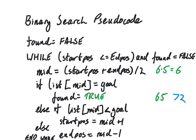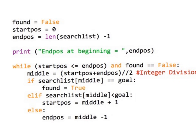That is the binary search pseudocode. If we implement it in Python, we have something fairly similar. We set found to false, start position to 0, and end position to the length of the list minus 1. While start position is before end position and the found flag is false, we set middle to start plus end using integer division — the double divide sign truncates any decimal. If the list at the midpoint equals our goal, found is true and the loop stops. Otherwise, if what we're looking at is less than our goal, we put the start position above the middle; else we put the end position one beneath the middle.